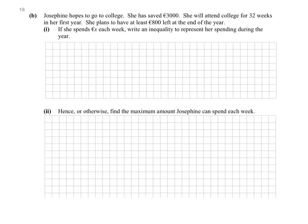So part B tells us that Josephine hopes to go to college. She's saved 3,000 euros. She will attend college for 32 weeks in her first year. She plans to have at least 800 left at the end of the year. If she spends x euros each week, write an inequality to represent her spending during the year.